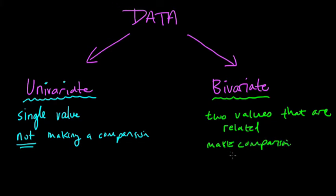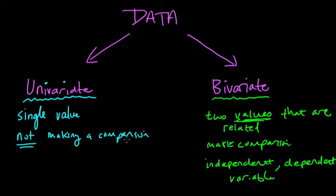And frequently what you'll hear with bivariate data is the terms independent and dependent variables. That's describing the two values or variables that you're looking at. So really, I guess I should say that bivariate data looks at two variables, whereas univariate data looks at single variables.